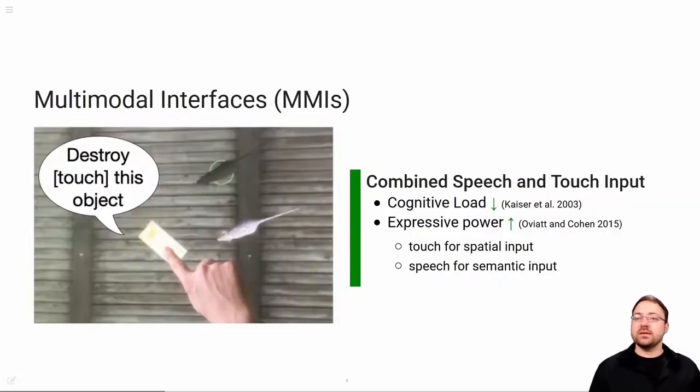A promising interaction paradigm in this context are multimodal interfaces, especially interfaces that use a combination of speech and touch input as depicted on the image on the left. This combination does not only have the unique potential to keep cognitive load down, but it also provides a high expressive power. Touch input excels at providing spatial information—you can simply touch the respective location or object on an interactive surface with your finger—while speech is suited to provide semantically rich information, for example to specify an action that has to be executed by the system.